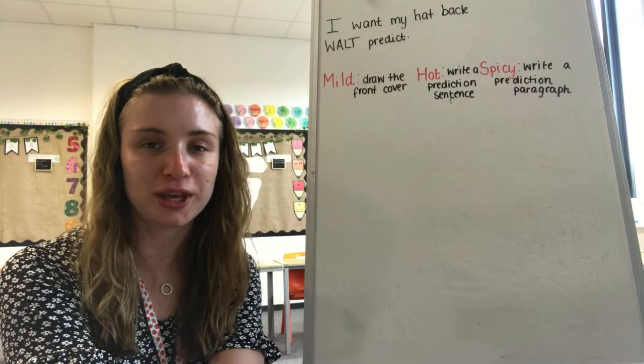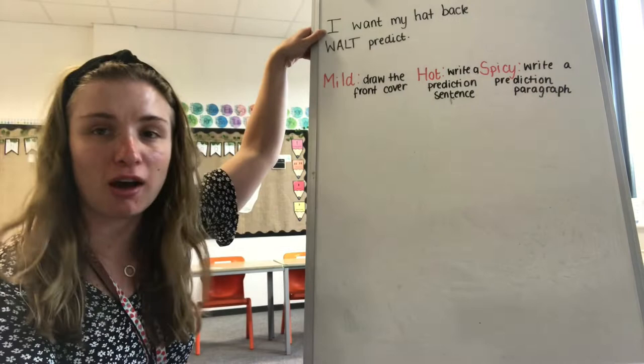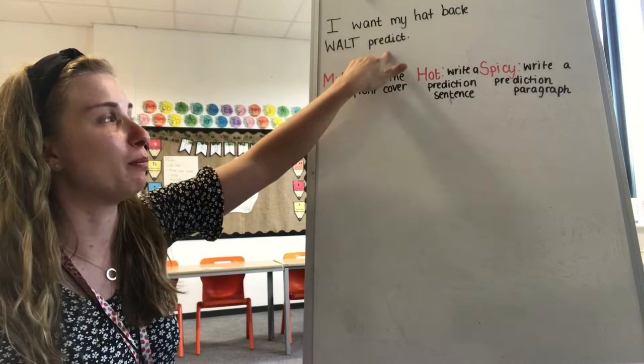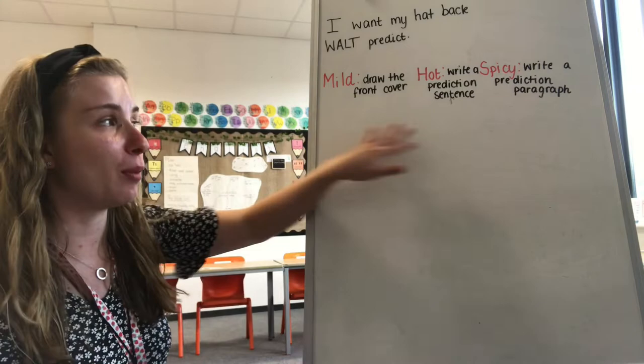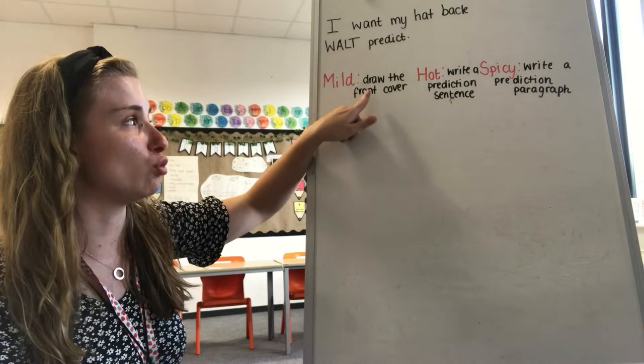So you've discussed what you think the book is about — now it's time to get on with our work. I've written at the top here our title, I Want My Hat Back, and our WALT which is we are learning to predict. Today we are all going to start on mild and work our way up to spicy if you want to. Our mild task is to draw the front cover.